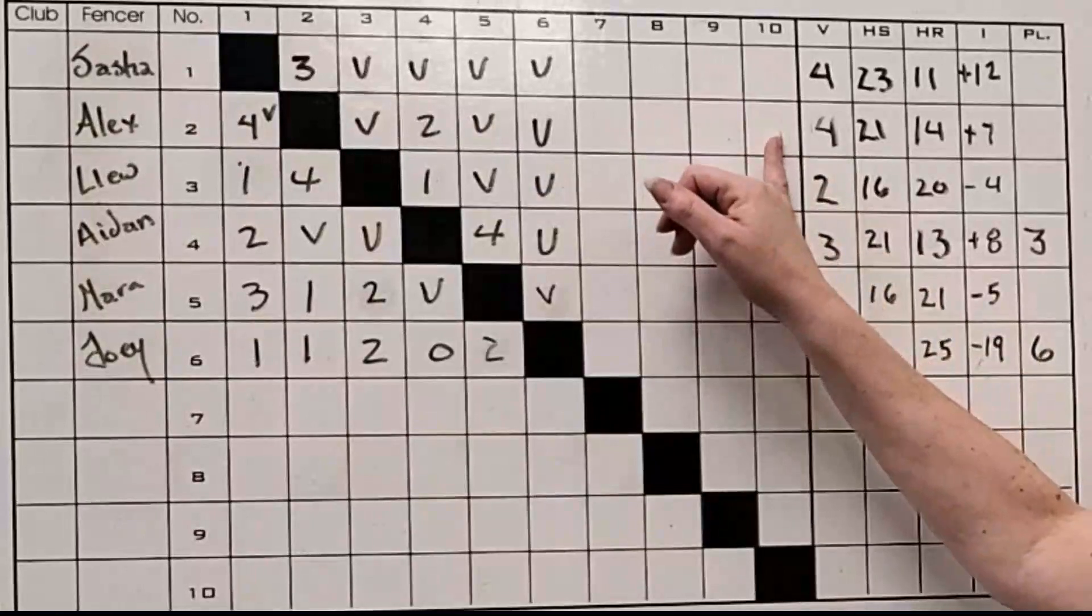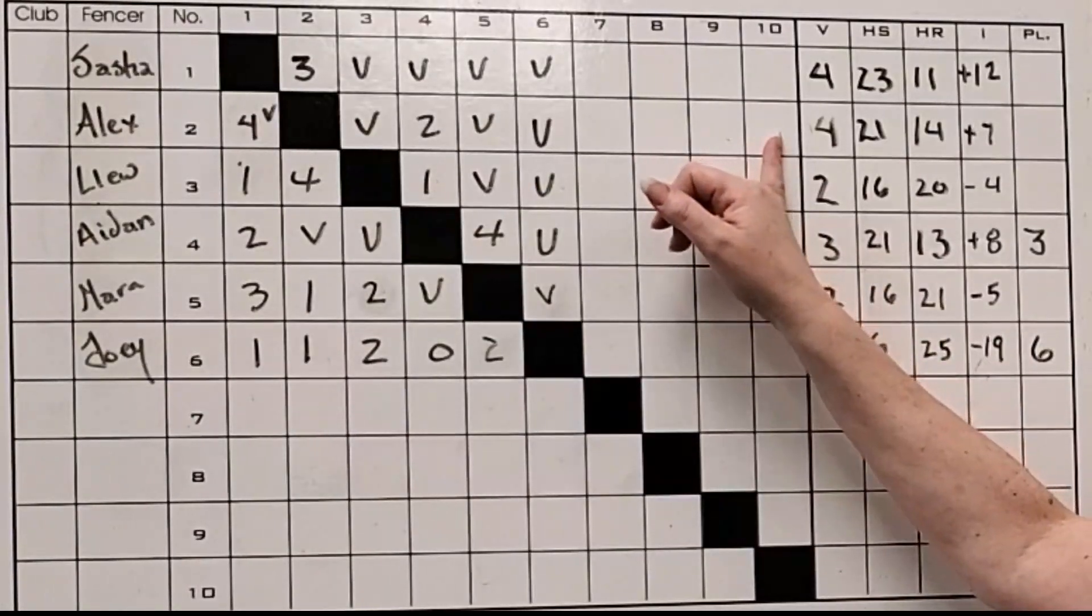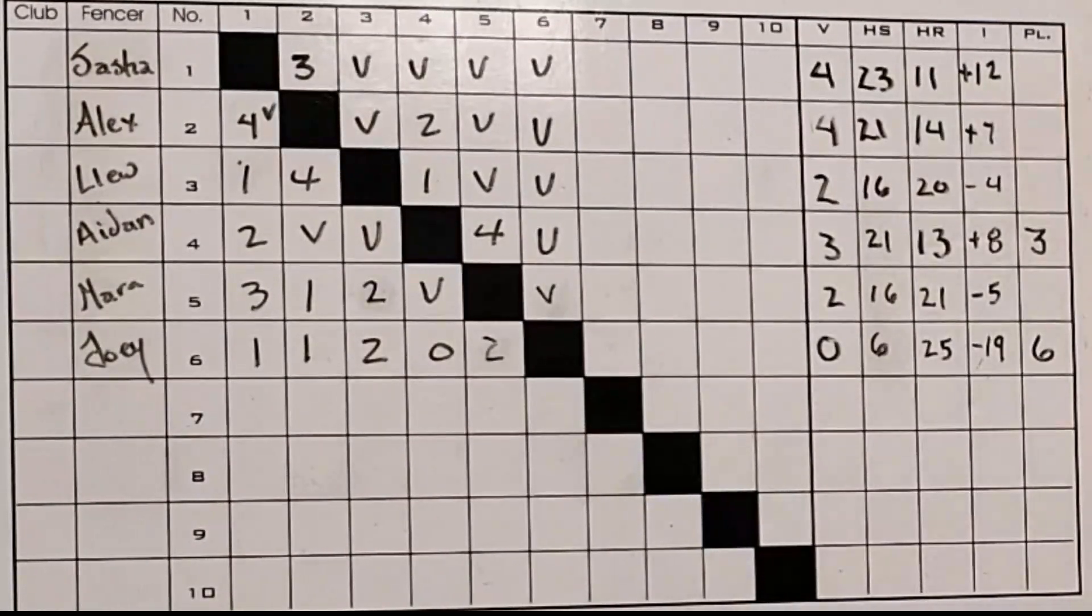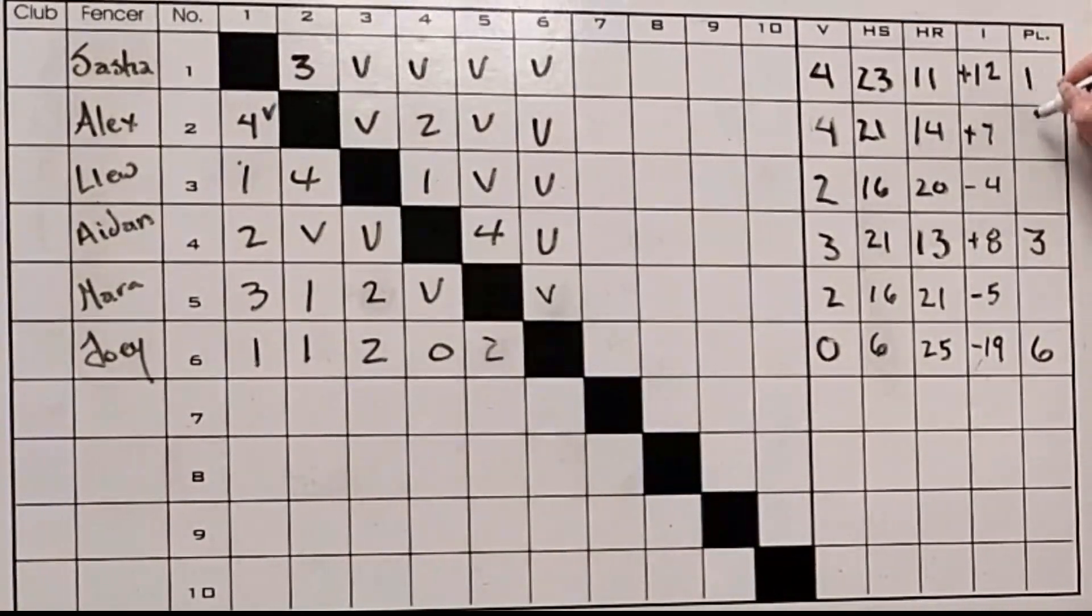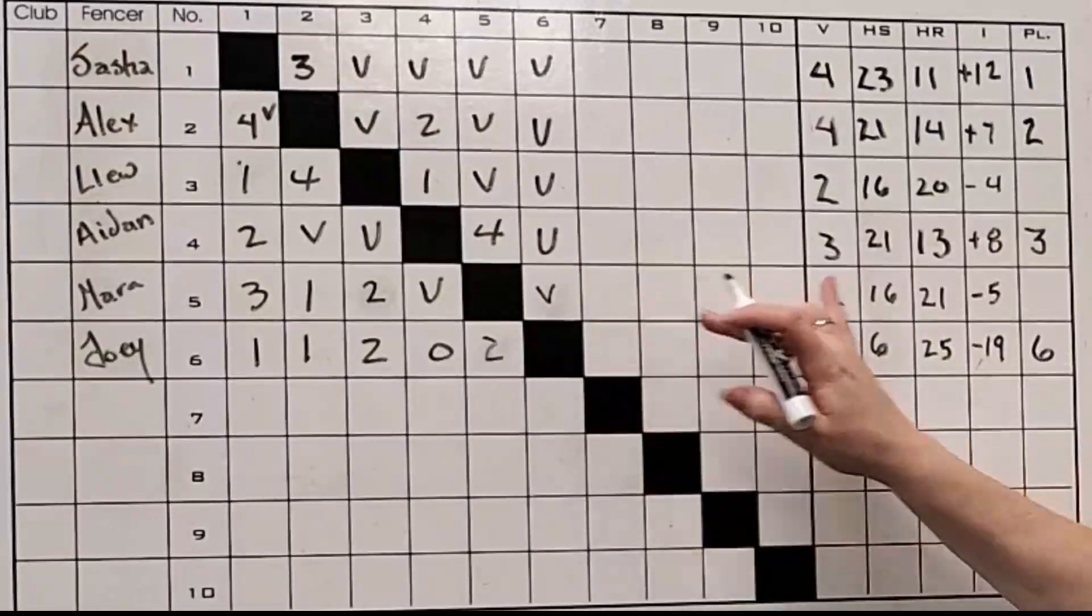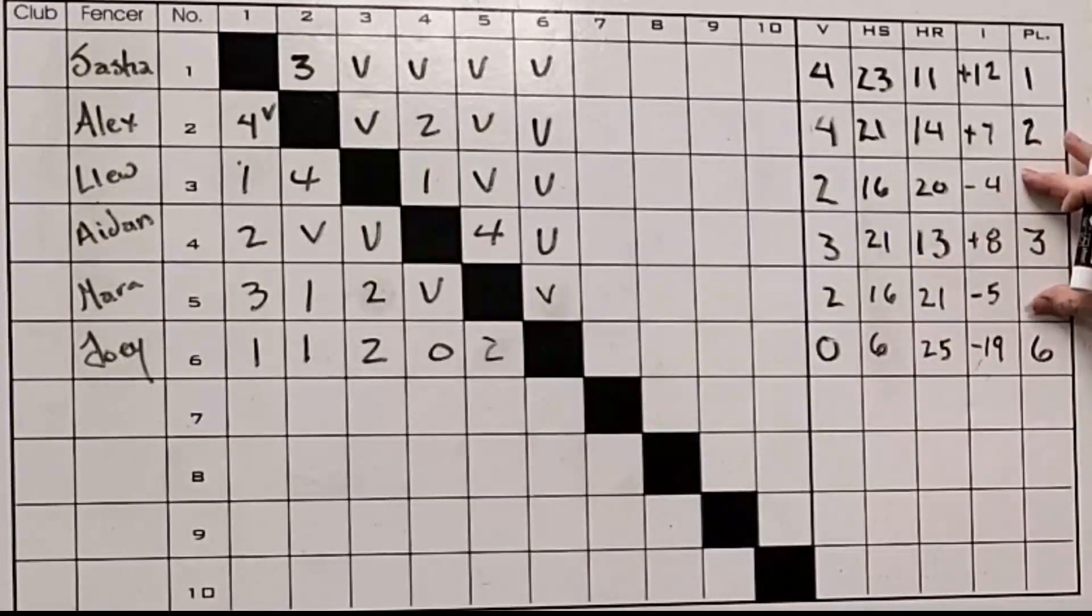Now that we've added up the indicator, we can decide between a tie on victories with Alex and Sasha who seeds first. You'll notice we have a plus twelve versus plus seven. Plus twelve is higher. Three victories is the next most. Now we have a tie between Louis and Mara: we have minus four versus minus five. And now we know what our complete pool is.